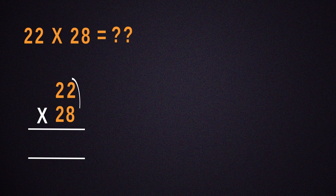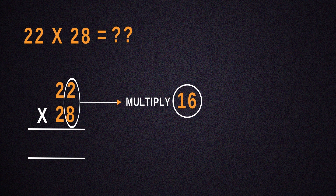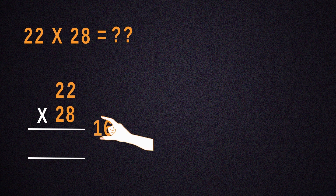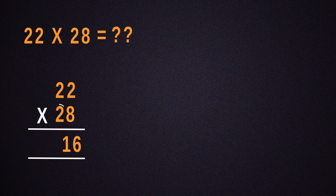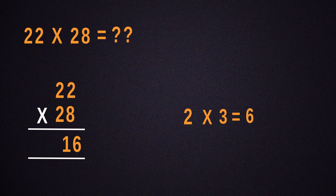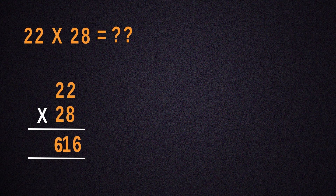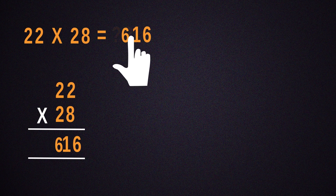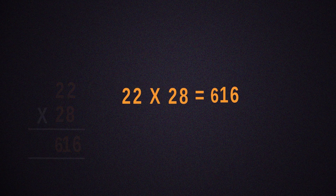For that, the number obtained by multiplying 2 by 8 will be 16 and should be put down. Then, you want to multiply 2 with its next digit, which is 3. This will give us 6 — bring that down. Place the result next to 16 and we get 616 as our answer.